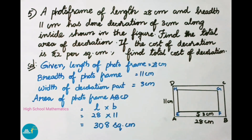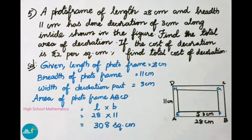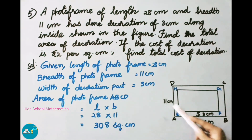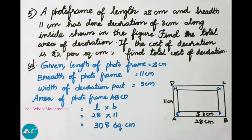Now we are going to find the area of the photo frame, that is ABCD, which equals length into breadth: 28 cm into 11 cm. That equals 308 square centimeters.